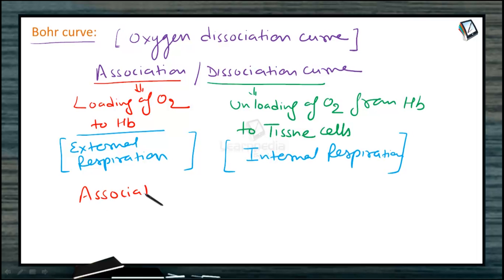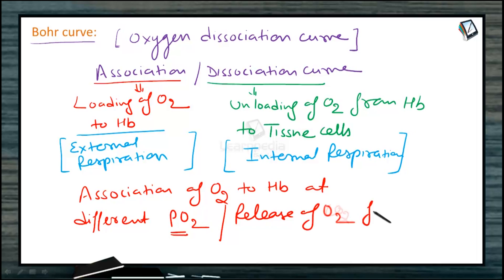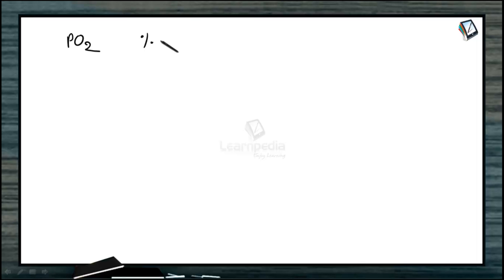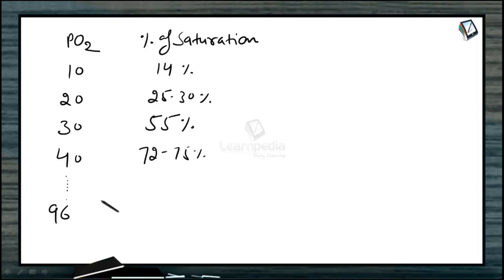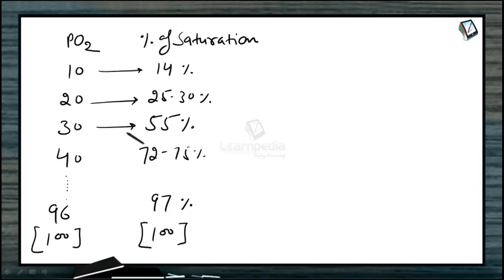Now we will discuss the association and release of O2 from hemoglobin at different pO2 values. On the x-axis is the partial pressure of oxygen, and on the y-axis is percentage saturation. At about 10 mmHg it is about 14% saturated; at 20 mmHg it is 25–30%; at 30 mmHg it is about 50–55%; at 40 mmHg it is around 72–75%; and at 96 mmHg it is around 97%. At 100 mmHg we take 100% saturation.